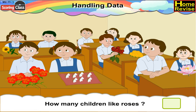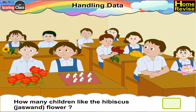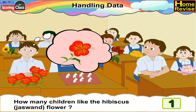How many children like roses? Three of them like roses. So write three in the box. How many children like the hibiscus flower? One child likes the hibiscus flower. So write one in the box.